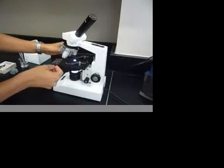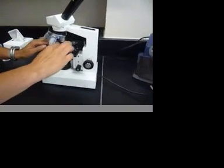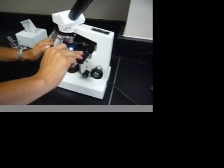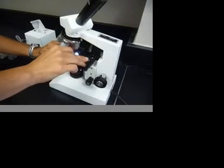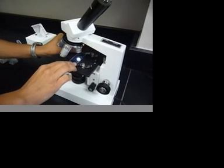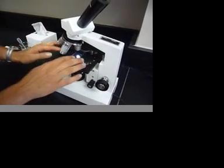Take the slide and you're going to place it under the stage clips. Try to center it so that your object is in the middle of the lens, and the light should be coming up through it.